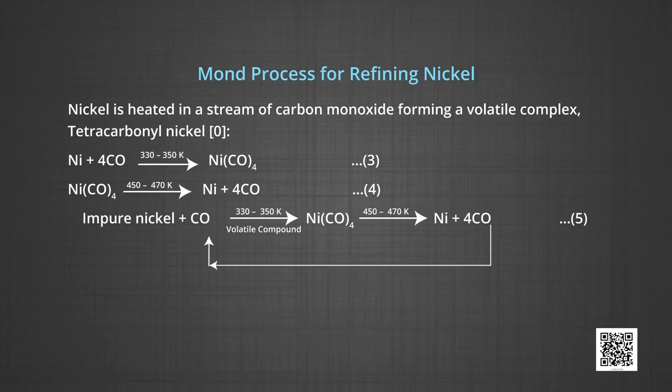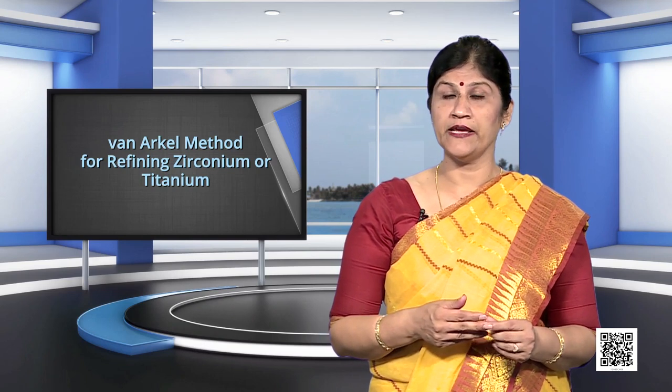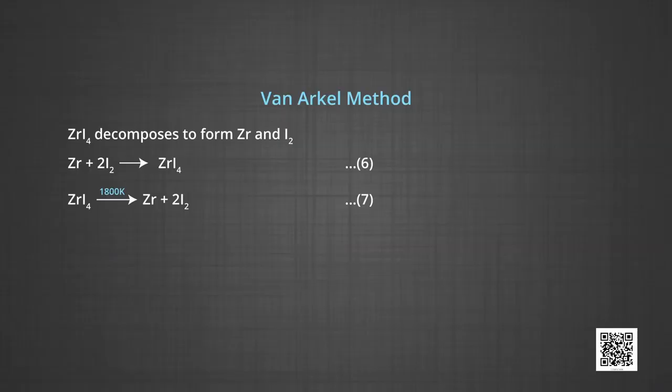Thus, you may see that the carbon monoxide is recycled in the process as shown. The next method under this category is Van Arkel method. This method is used for obtaining ultra pure metals for refining zirconium or titanium. This method is very useful for removing all the oxygen and nitrogen present in the form of impurity in certain metals like zirconium and titanium. The crude metal is heated in an evacuated vessel with iodine. The metal iodide being more covalent, volatilizes and as in the reaction you can see zirconium reacts with iodine to form zirconium iodide. The metal iodide is decomposed on a tungsten filament electrically heated to about 1800 Kelvin. The pure metal is thus deposited on the filament and zirconium iodide decomposes to form zirconium and iodine.